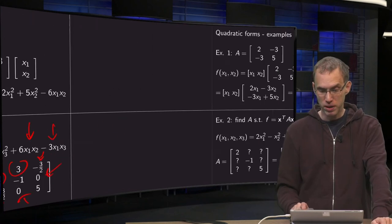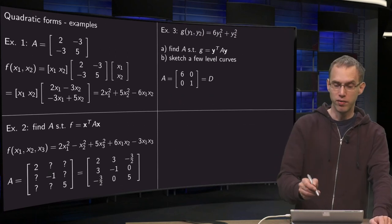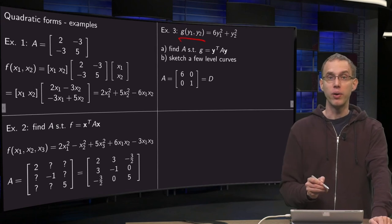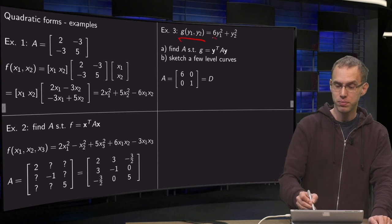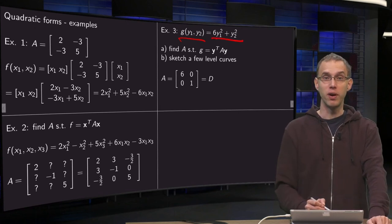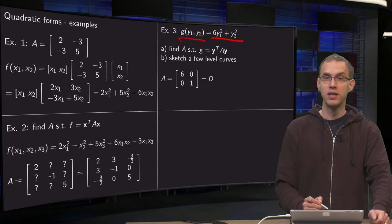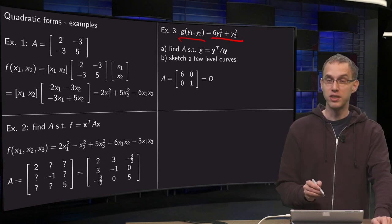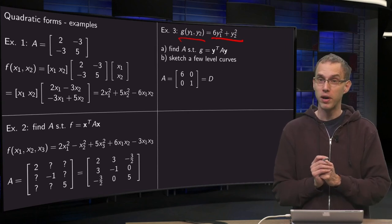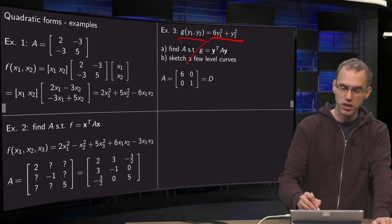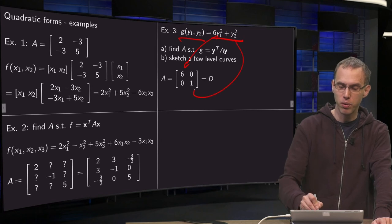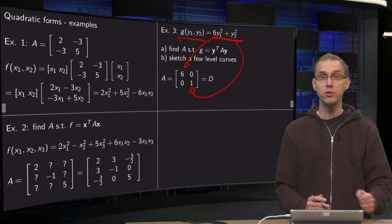Let's try now to make some sketches. We have a g of y1 and y2 without mixed terms for now, so we have 6y1 squared plus y2 squared. Now first find an A such that g is y transpose times A times y. Well, that's easy, we have a 6 for the y1 squared and a 1 for the y2 squared.